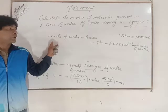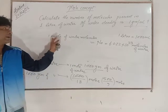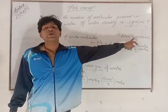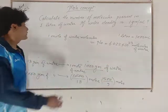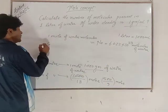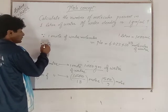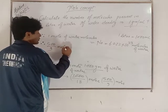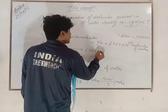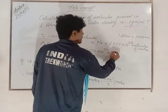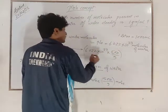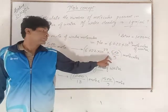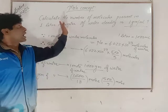Now here you can go ahead by unity method. If one mole of water molecules have 6.022 into 10 to the power 23 molecules, then 500 by 9 moles will contain this number. Therefore, 500 by 9 moles will have 6.022 into 10 to the power 23 into 500 by 9. This number of molecules.